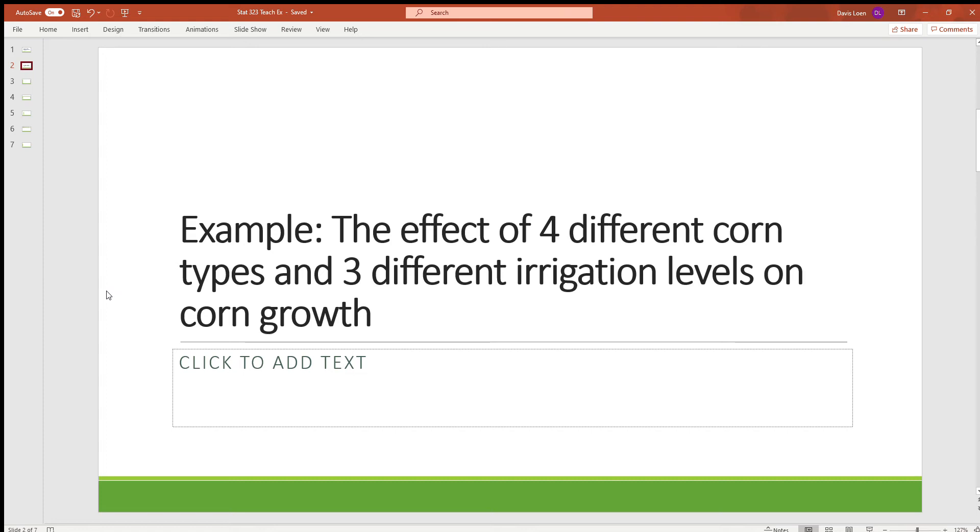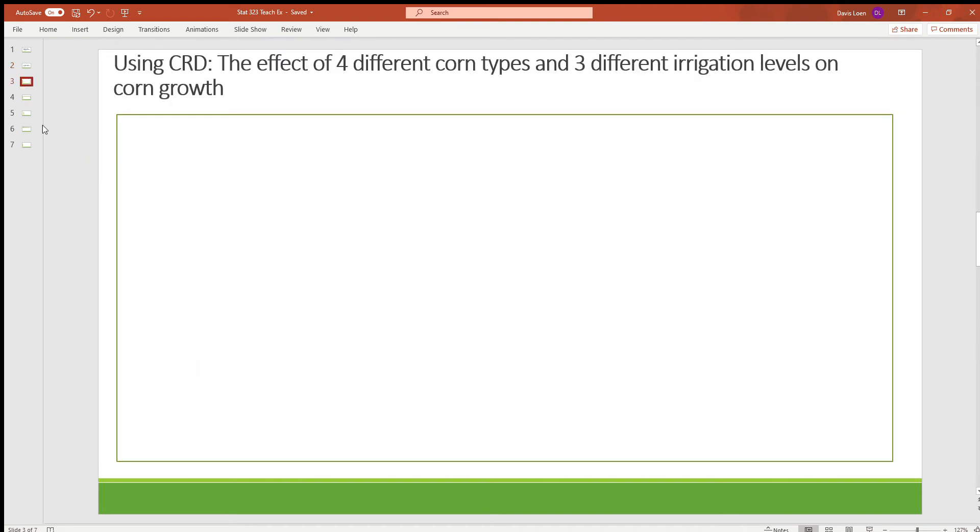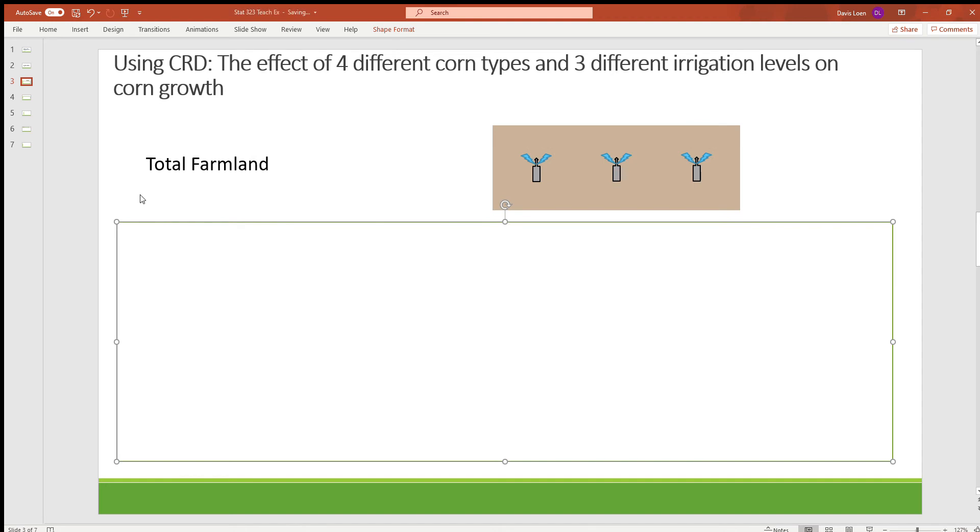So in a completely randomized design, we would start with the total farmland that we have available that we'll be using for this experiment. And for each experimental unit to be randomly assigned the combination of irrigation levels and corn type, we will need to be able to independently control each.